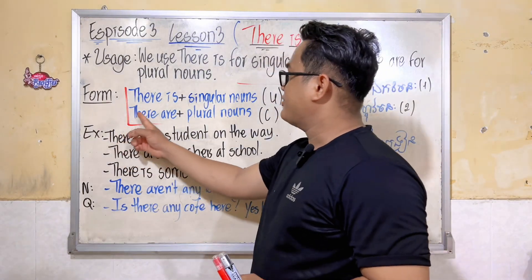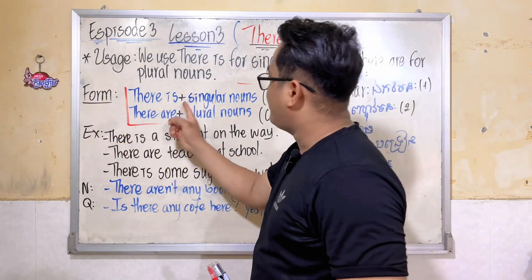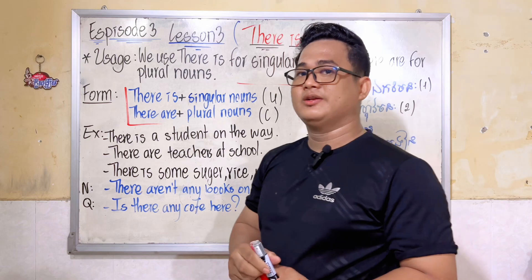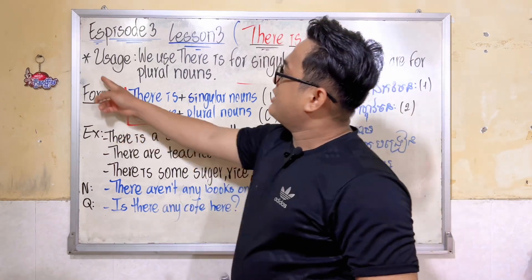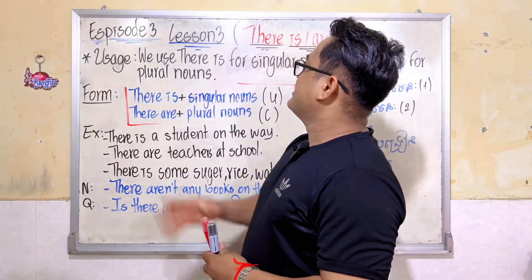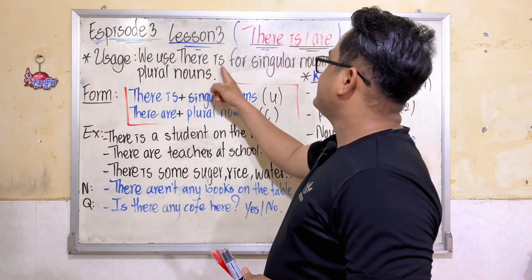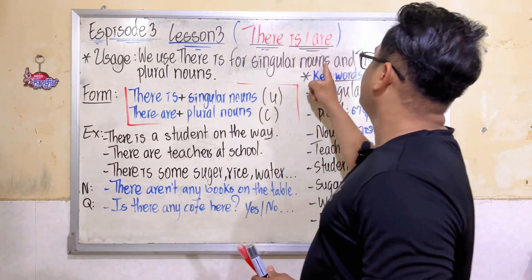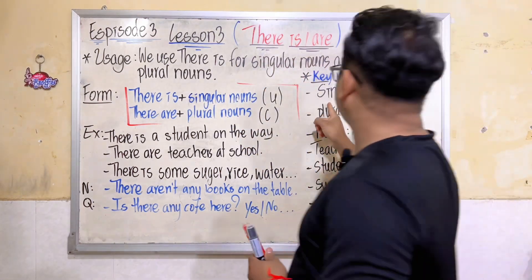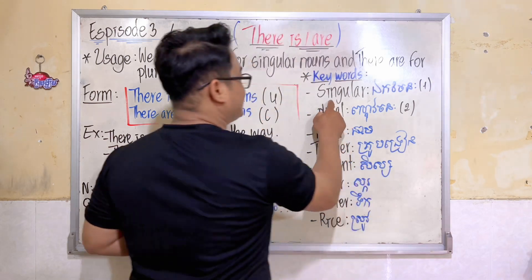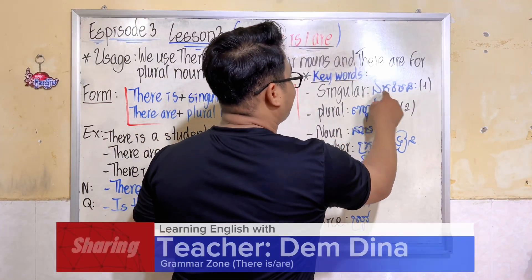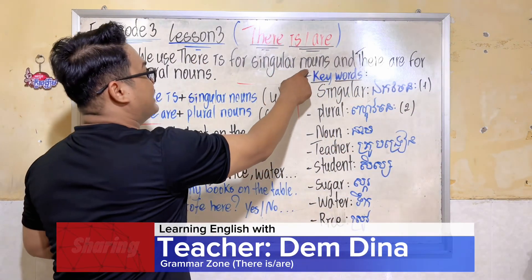Okay, let me move to the next one. I want to show you how to use and make it easy to understand about the form, and then you are going to make a short example by yourself. Number one: we use 'there is' for singular nouns. As you know, what is a singular noun?